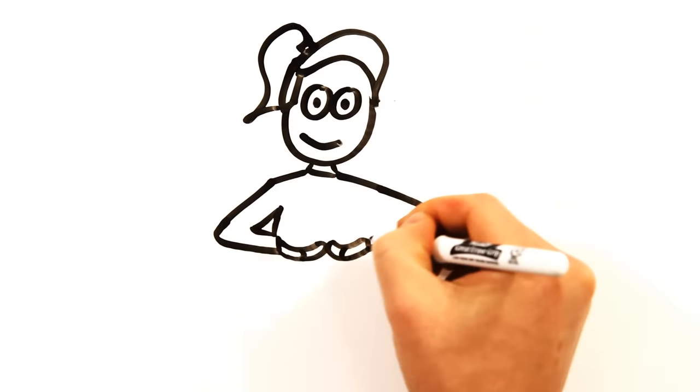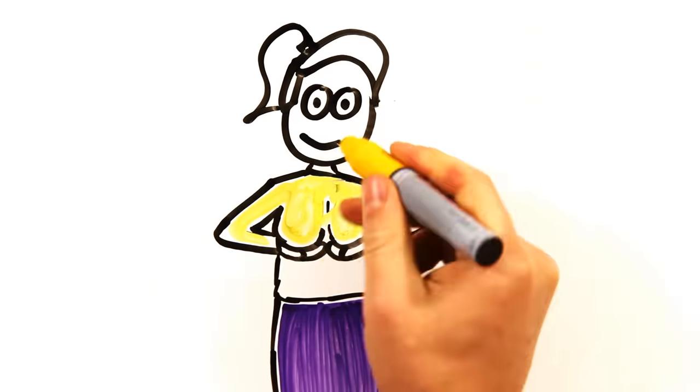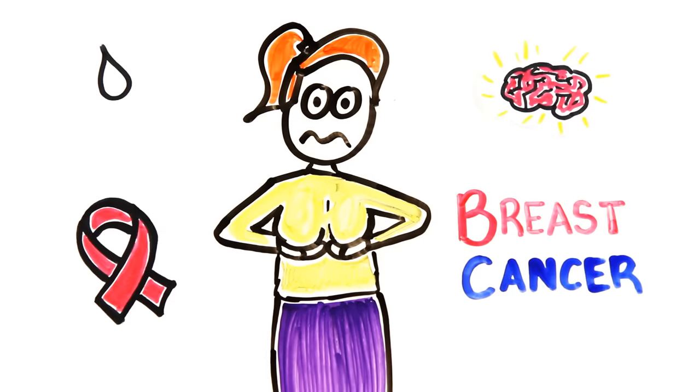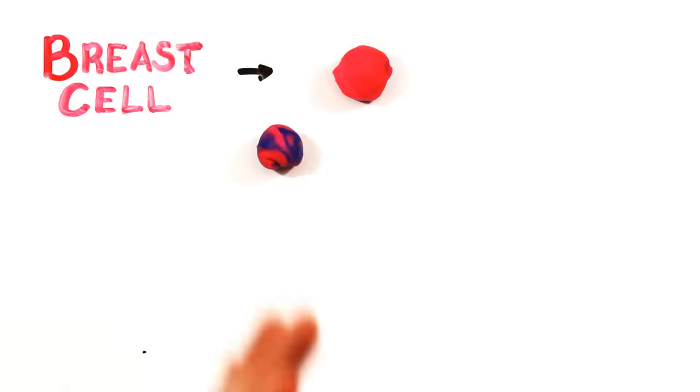Despite being an amazing source of both nutrition and pleasure, breasts are incredibly vulnerable. Breast cancer is the most prevalent form of cancer in North America. Cells that divide often are at a higher risk of mutation than cells that don't divide.